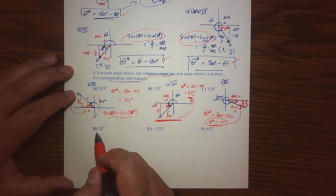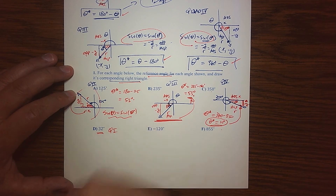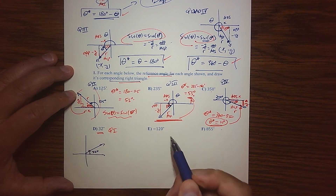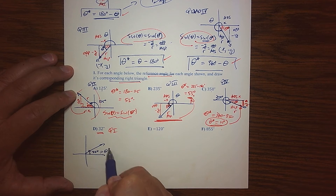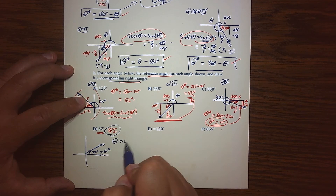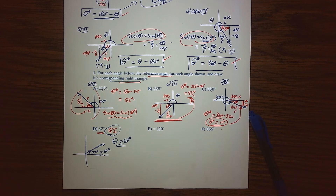So sine of 32 — what's nice about this is that it's quad 1. If I drew a picture, 32 degrees takes us to about right there. It turns out that it's basically its own reference, because it's already between the terminal side and the x-axis. So in quad 1, theta and theta star are basically the same — you're essentially your own reference, which shouldn't be any surprise.